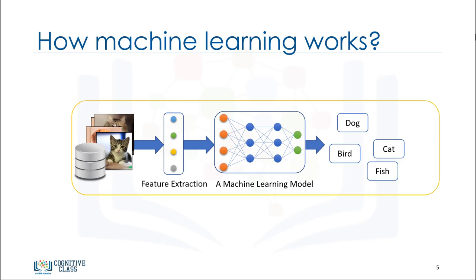So, machine learning algorithms, inspired by the human learning process, iteratively learn from data and allow computers to find hidden insights. These models help us in a variety of tasks, such as object recognition, summarization, recommendation, and so on.